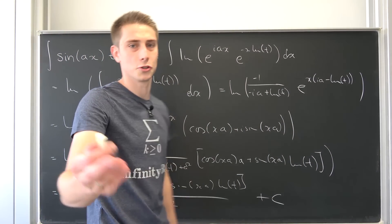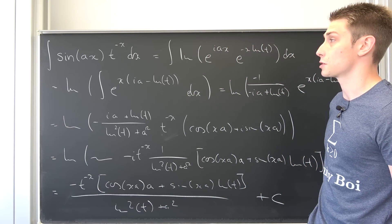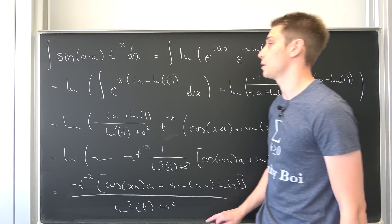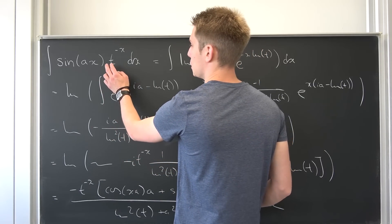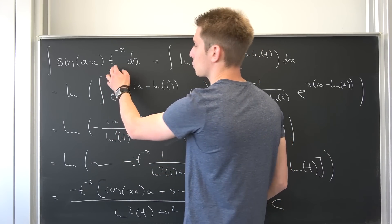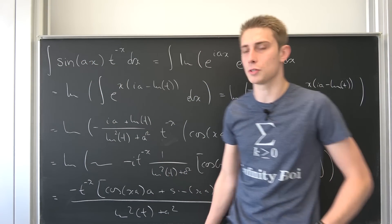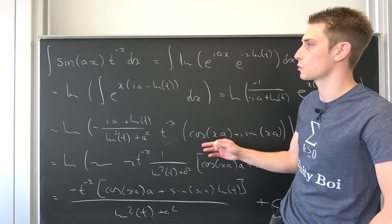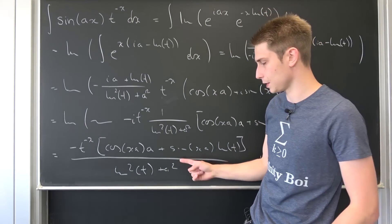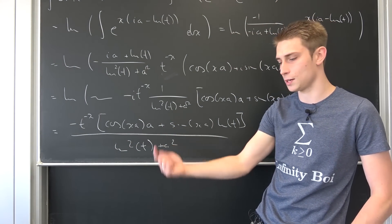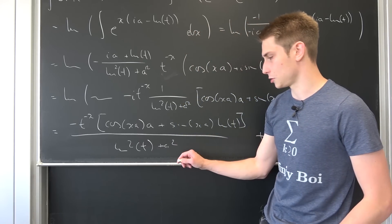I don't know what other ways there are — you can do integration by parts, for example. With integration by parts you integrate t to the something, differentiate the sine two times, then you have this integral once again on the other side with this factor, you divide both sides by it, and then you're good.